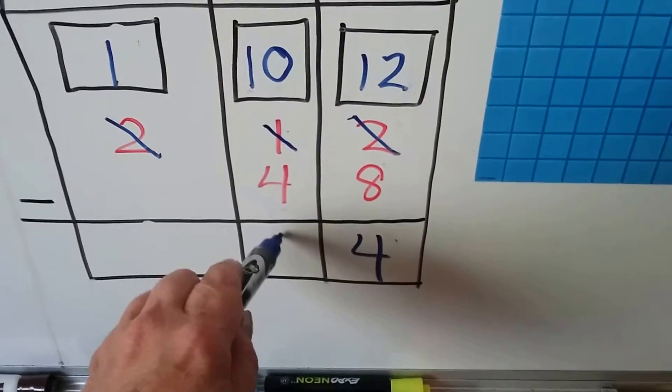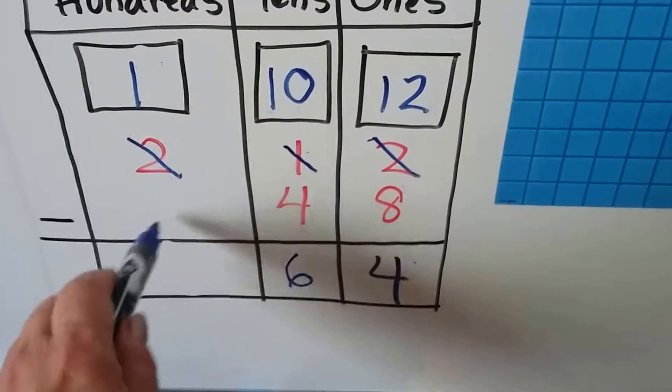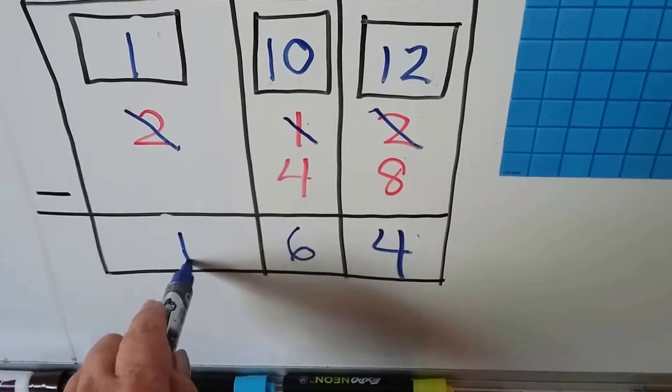We have 10, take away 4. That's a 6. And we're not taking away anything here. This 2 became a 1, so we just dropped the 1 down.